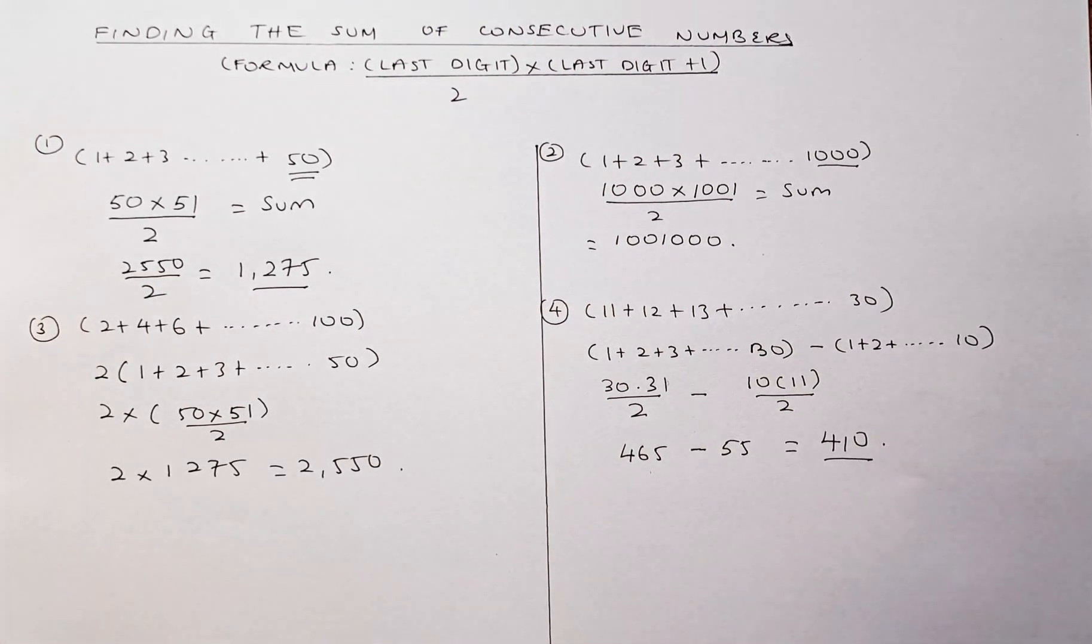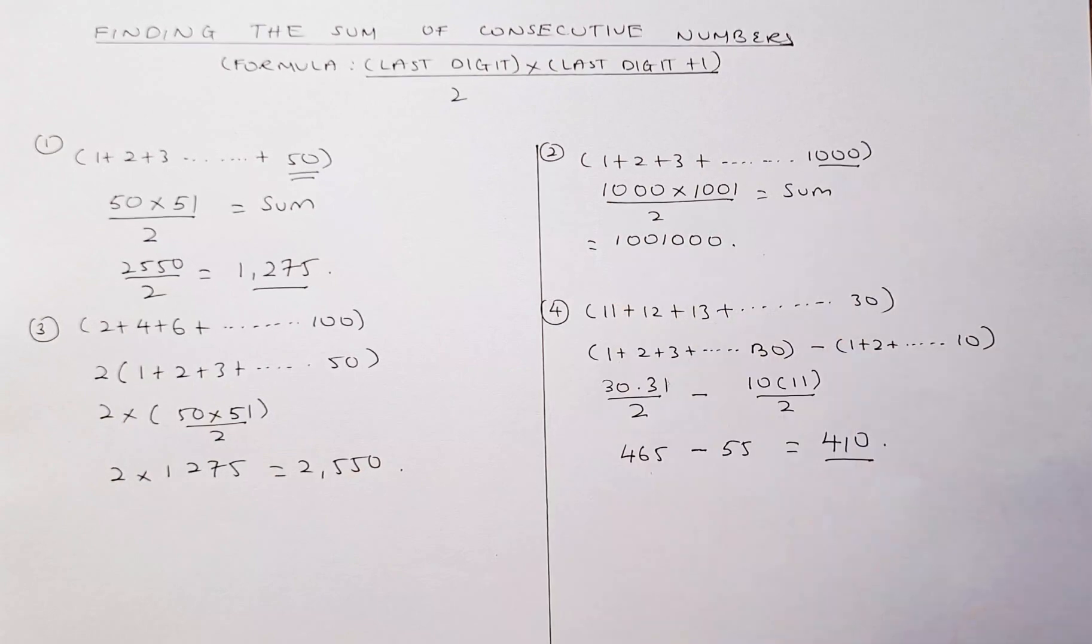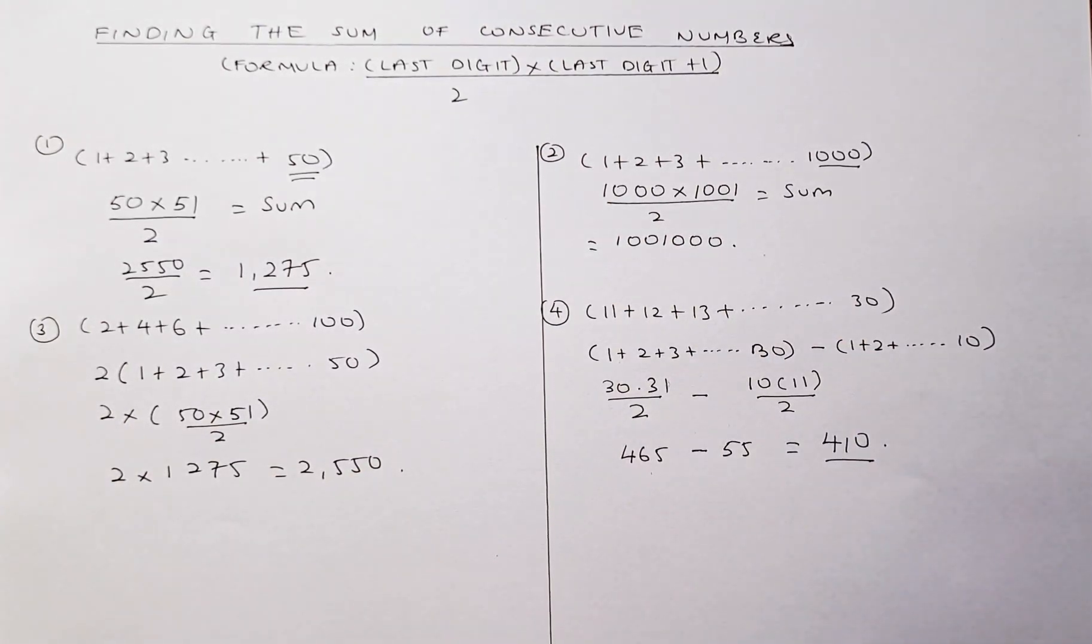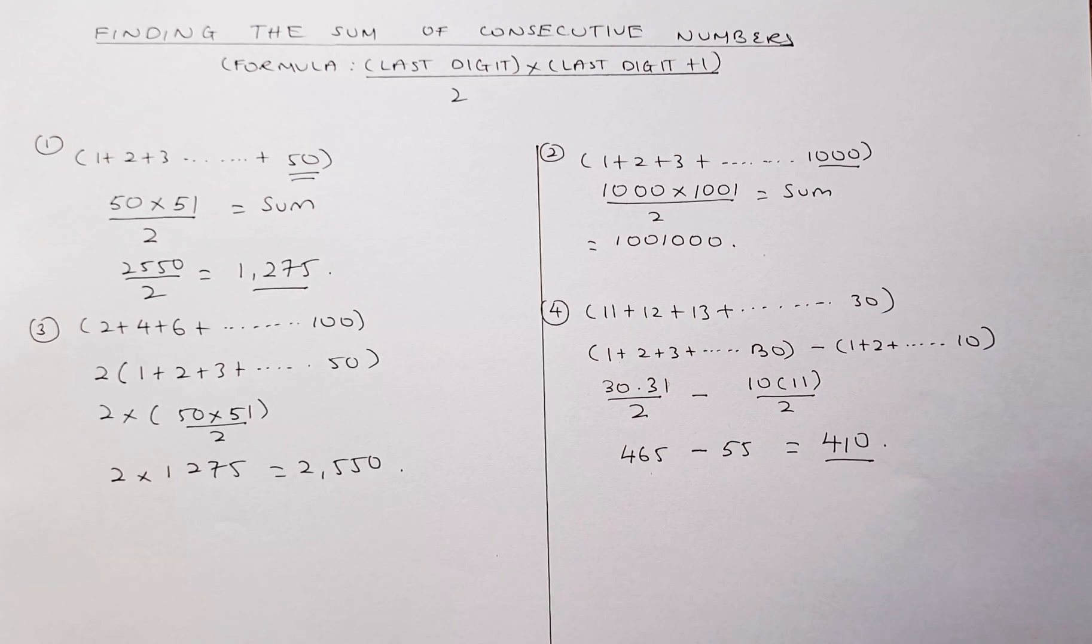So that is how you're going to add the sum or find the sum of consecutive numbers. If you have starting from 1 is no problem. You just use the formula. But if it is slightly different in a modification type, you have to adjust to find the sum of the consecutive number. So have a good day everyone and see you soon.